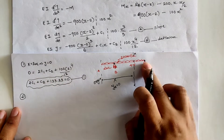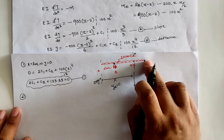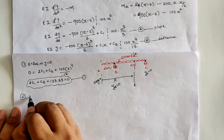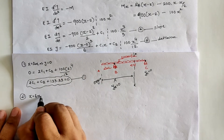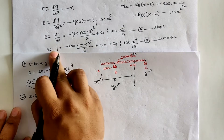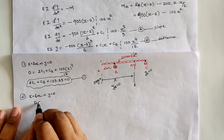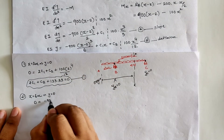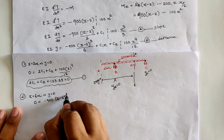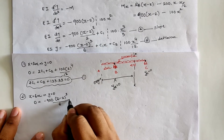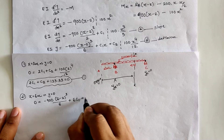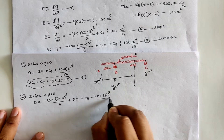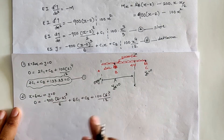Support C is at 6 m from the origin, so the second boundary condition is x = 6, y = 0. Applying in equation B: EI·(0) = −900·(6 − 2)³/6 + 6C₁ + C₂ + 100·(6⁴)/12. Solving gives the second equation in C₁ and C₂.